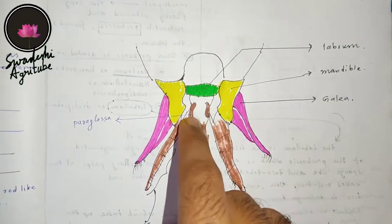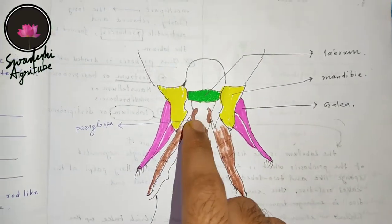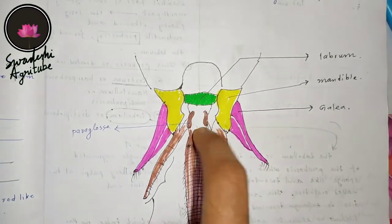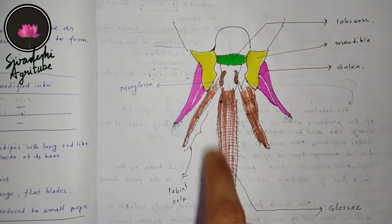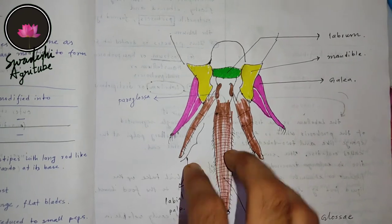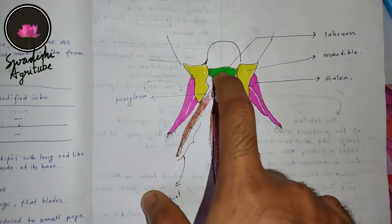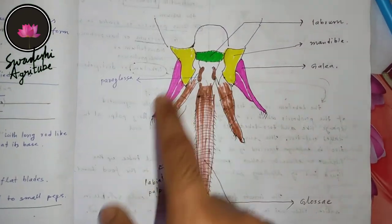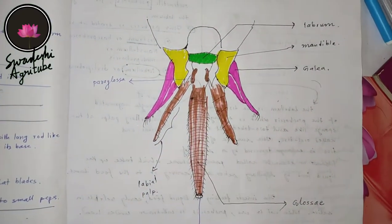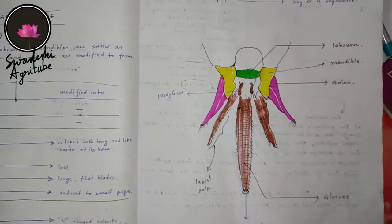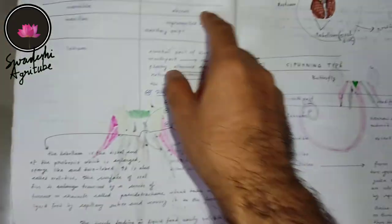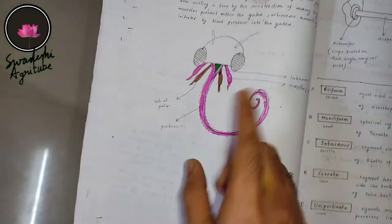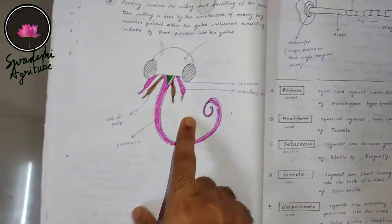Talking about the paraglossa, you can see that they closely embrace the glossa at its base. To summarize: labrum is unchanged, mandible is unchanged, and the main modification is in the labium part. That's for today. Thanks for watching. The next videos will be on sponging type and siphoning type of mouth parts.